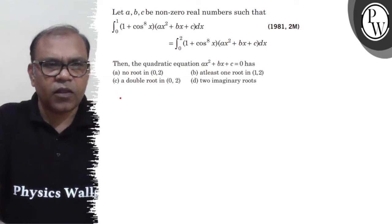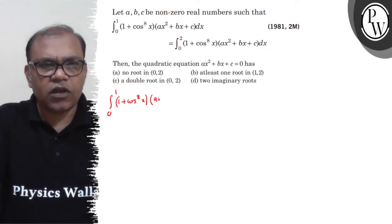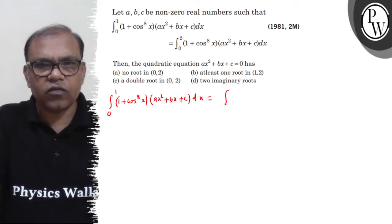Four options are given ahead. So look, in this question this is given: 0 to 1, (1 + cos⁸x)(ax² + bx + c)dx. This equals 0 to 2, (1 + cos⁸x)(ax² + bx + c)dx.